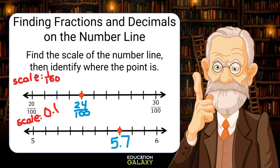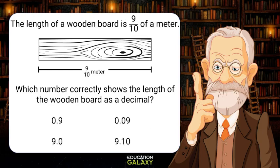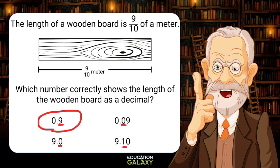Let's try some word problems now. The length of a wooden board is 9 tenths of a meter. Which number correctly shows the length of the wooden board as a decimal? Well, I read that as 9 tenths, so I'm looking for the decimal that is also read as 9 tenths. That would be a 9 in the tenth spot. That would be this one!